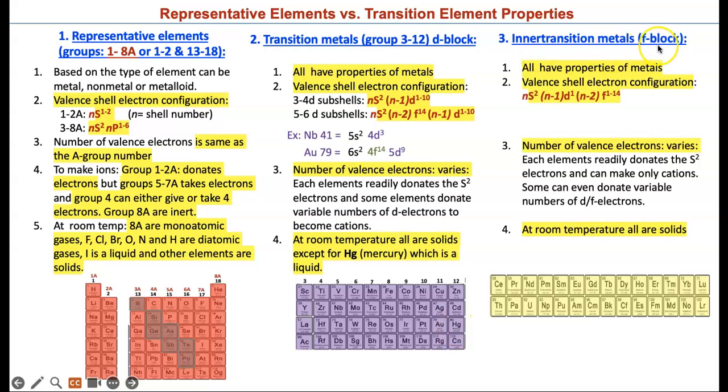Inner transition metals are F block elements. They all have properties of metals. Their valence shell electron configuration is Ns2, N-1, D1, and N-2, F can be 1 to 14. Here's an example of Ho, this element with 67 protons. It has 10 F electrons. So this will be its valence electron configuration. Number of valence electrons varies. Each element readily donates the 2s electrons and can make only cations. Some even donate variable numbers of D or F electrons. At room temperature, all of these guys are solids.